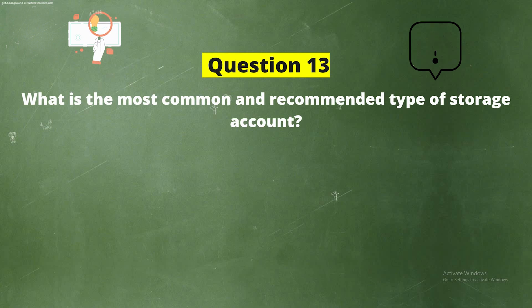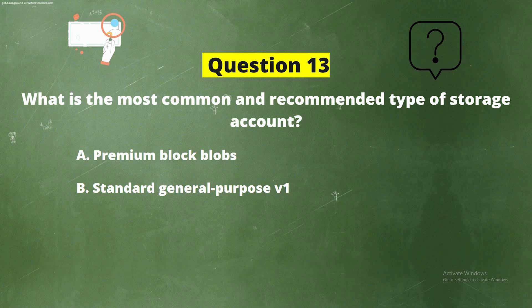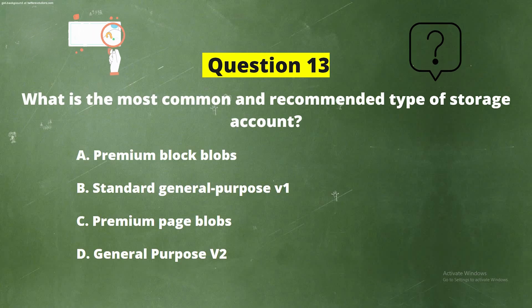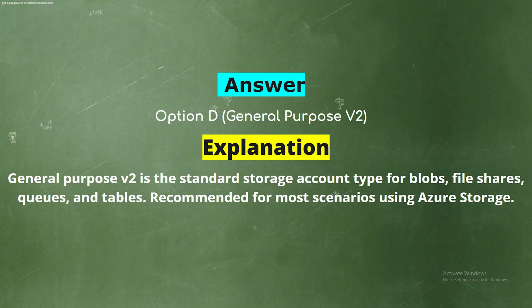Question 13: What is the most common and recommended type of storage account? Options: Option A - Premium Block Blobs, Option B - Standard General Purpose V1, Option C - Premium Page Blobs, Option D - General Purpose V2. The correct answer is Option D - General Purpose V2. Explanation: General Purpose V2 is the standard storage account type for blobs, file shares, queues, and tables, and is recommended for most scenarios using Azure Storage.